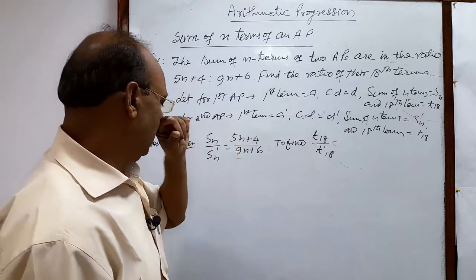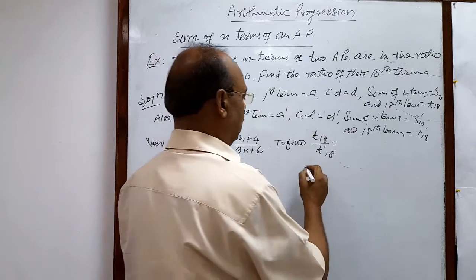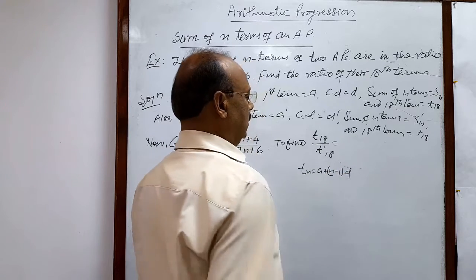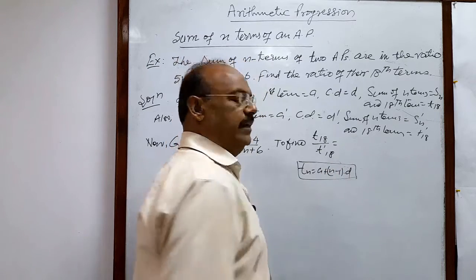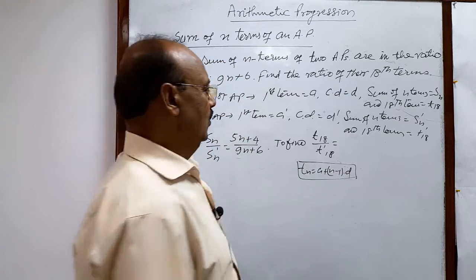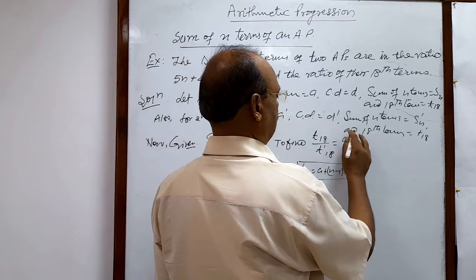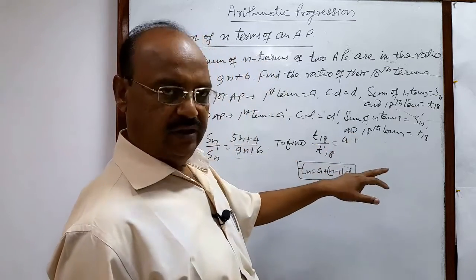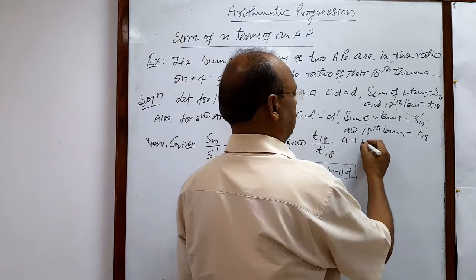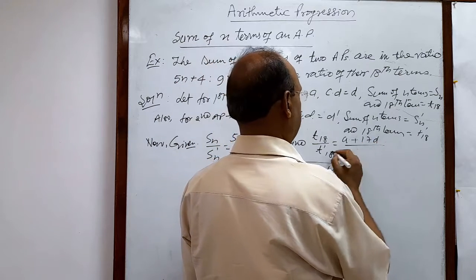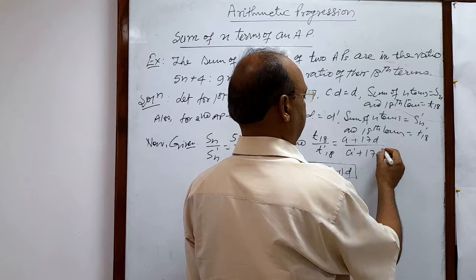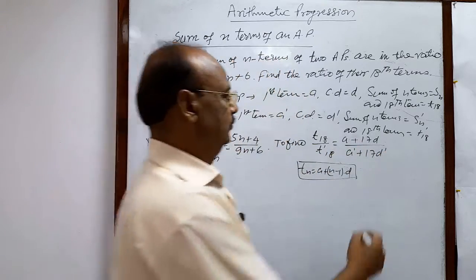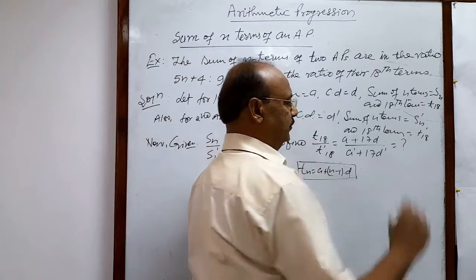And by the formula, tn is equal to a plus n minus 1 into d. This is the formula for finding n terms of AP. We can write here a plus n minus 1 into d, means 18 minus 1 into d, which is a plus 17d. And in denominator a dashed plus 17d dashed. We have to find out this ratio, we have to evaluate it.